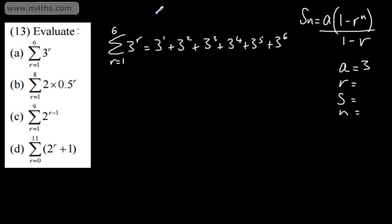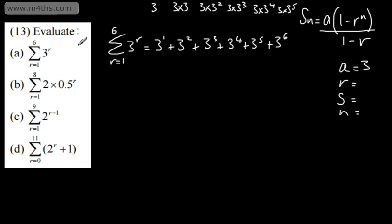Now let's look at the ratio. After a while the ratio will become very apparent. We have 3, then 3 times 3, then 3 times 3 squared, 3 times 3 cubed, 3 times 3 to the power of 4, and 3 times 3 to the power of 5. So in this particular case the ratio is also 3. The ratio is this value in the expression. For n, since r equals 1 to 6, there are clearly 6 terms.